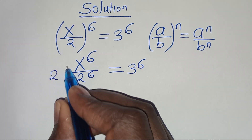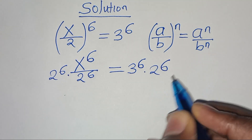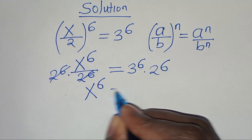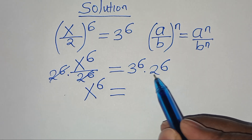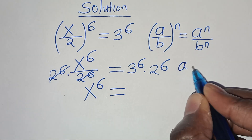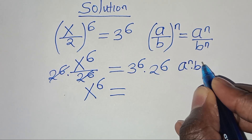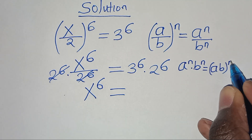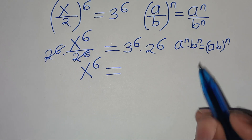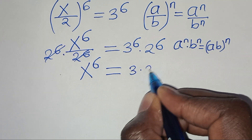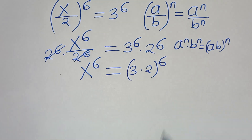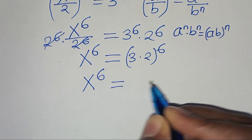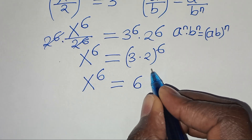Let's multiply both sides by 2^6, so that now we have x^6 equal to 3^6 times 2^6. This is in the form of a^n times b^n, which we can express as (a times b) raised to the power of n. Applying this property, we have (3 times 2) raised to the power of 6. Therefore, x^6 equals 6^6.